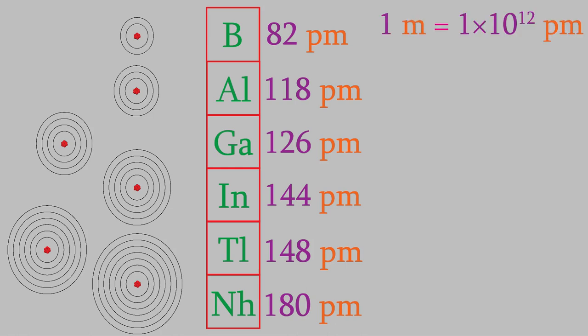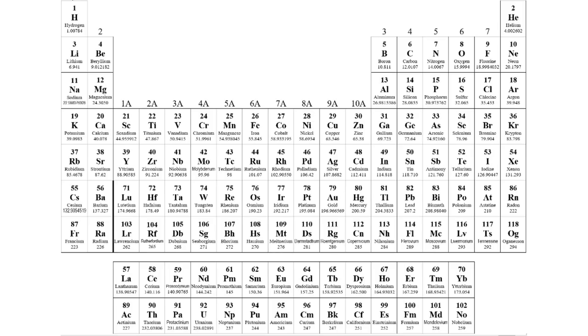A picometer is a trillionth of a meter. So, atoms get larger as we go down the periodic table. But what about when we move from left to right? This time, to understand the change in the atomic radius, we need to think about the effective nuclear charge on the valence electrons.